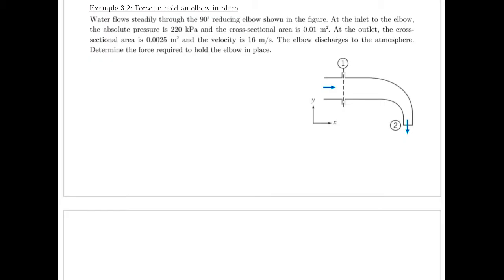So this says water flows steadily through this 90 degree reducing elbow, shown in the figure there. At the inlet, the pressure is 220 kPa, cross-sectional area 0.01 meters squared. At the outlet, the cross-sectional area is 0.0025 meters squared, and the velocity is 16 meters per second.